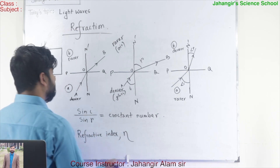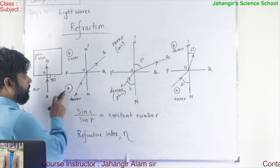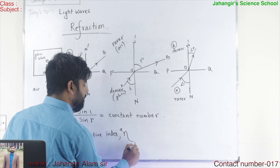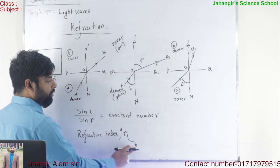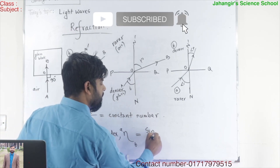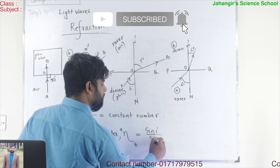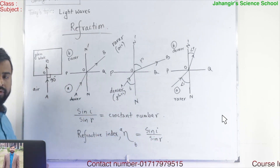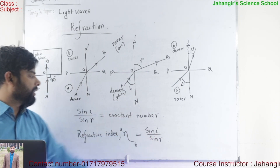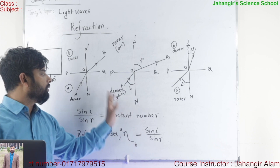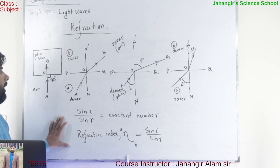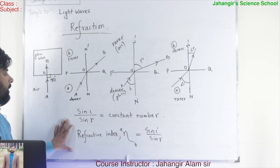Refractive index is denoted by eta. Here light passes from air medium A to medium B, so we have to write A to B. So the refractive index of B with respect to air equals sin i by sin r. The ratio of the sine of the angle of incidence to the sine of the angle of refraction is a constant number for a fixed pair of media and particular color of light, and is called the refractive index.